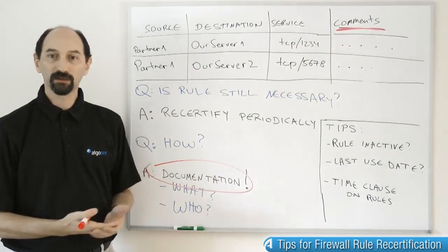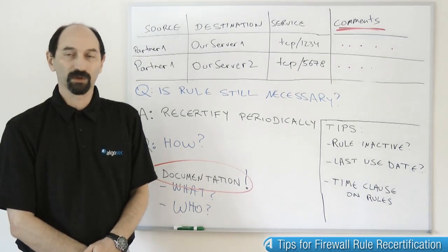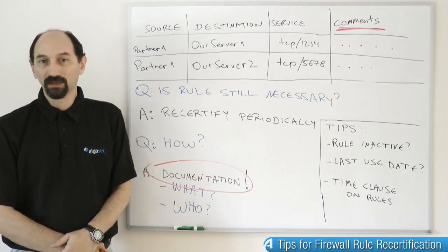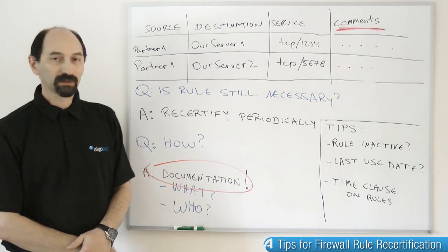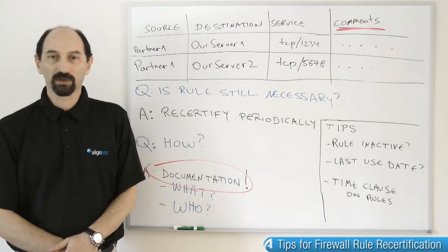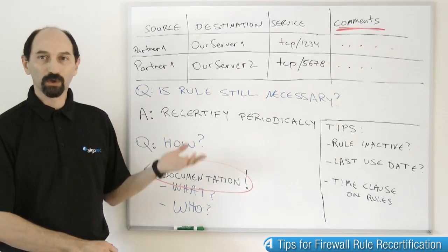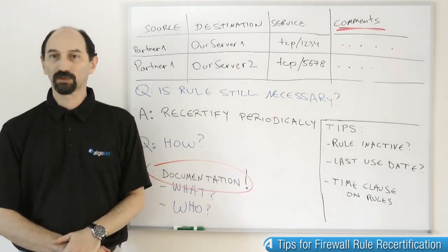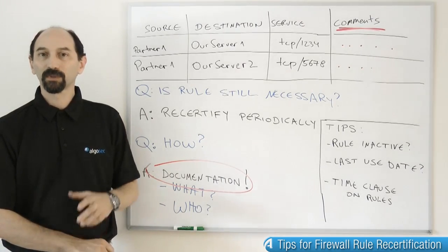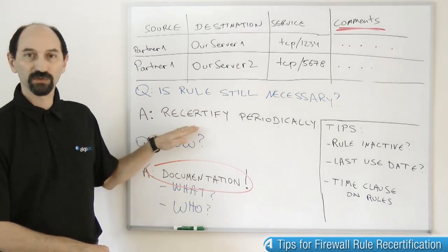When you need to recertify, you have information available to start the recertification process and can discover whether the rule is still necessary and who owns it. Some vendors don't provide very convenient documentation and commenting mechanisms, so luckily there are third-party tools that you can use to centrally manage and document your firewall rules across multiple vendors. Those systems allow you to add more comments — maybe unrestricted in length — long documentation, attached documents, etc.